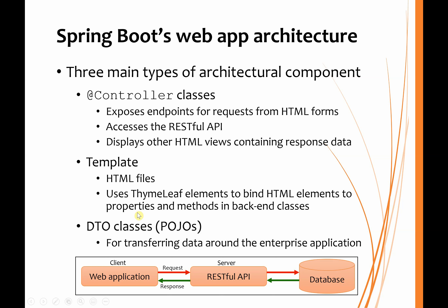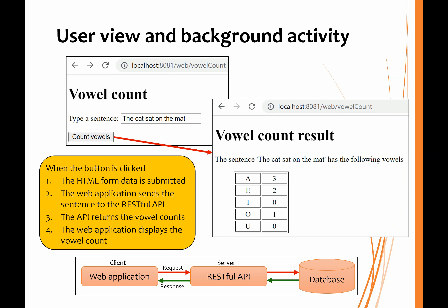To facilitate the transfer of objects between the various components of this architecture, we use data transfer objects (DTOs). These are POJOs — plain old Java objects — just standard Java classes that store the data to be transferred across the system. From the user's point of view, they're just going to type some data, press a submit button, and get a result. But of course, in the background, there's a lot more going on.